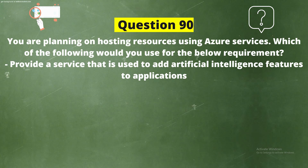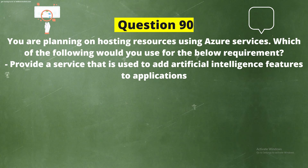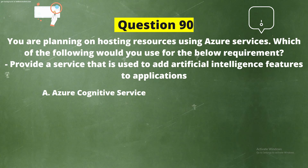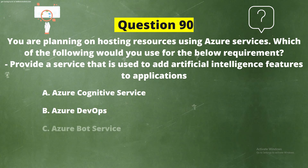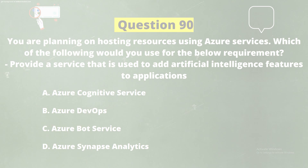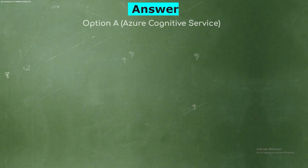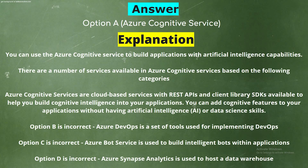Question 90: You are planning on hosting resources using Azure services. Which of the following would you use to provide a service that is used to add artificial intelligence features to applications? Options: A) Azure Cognitive Service, B) Azure DevOps, C) Azure Bot Service, D) Azure Synapse Analytics. The correct answer is option A, Azure Cognitive Service.